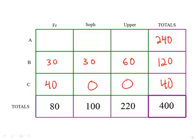So now we want sophomores from A. We'll look down the sophomore column. We have blank plus 30 plus 0 equals 100. Clearly this number has to be 70. And that's our answer.